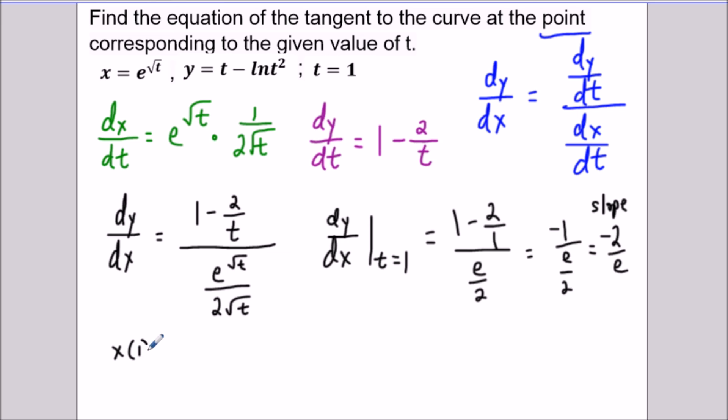But now to write the equation of our line we have to know, what is the value of x at t equals 1? So we plug in 1 for t and it's e^(√1) which is just e. And then the same thing for y. Our y coordinate, we're going to have 1 - ln(1)² is 1. And ln(1) is 0. So this represents that our point here is (e, 1).